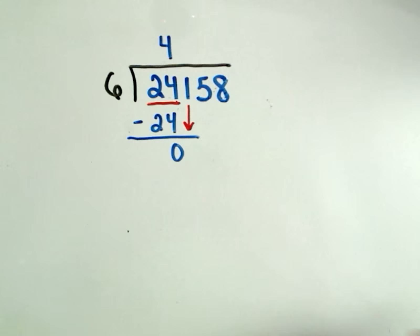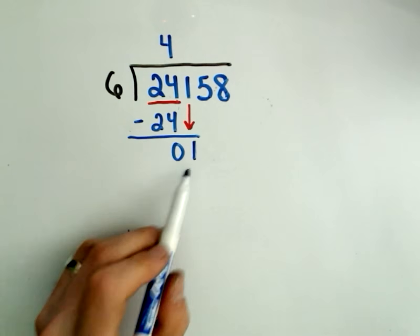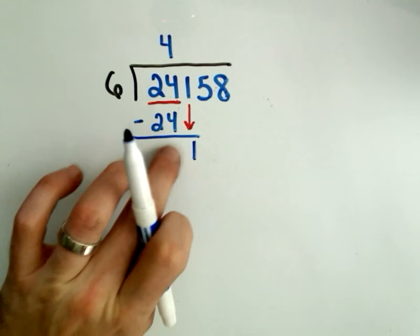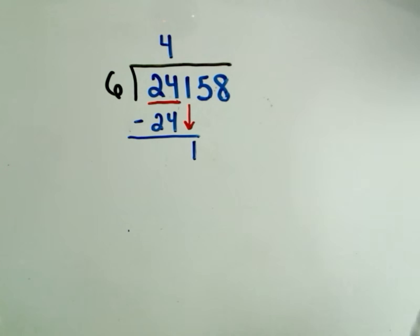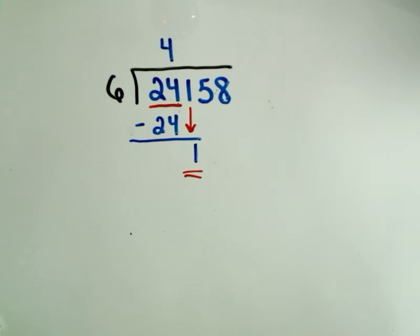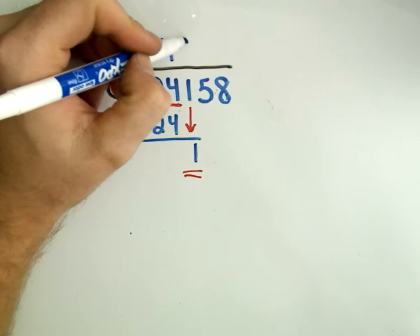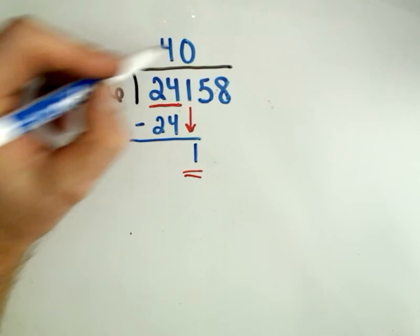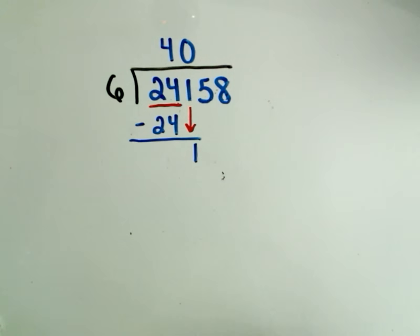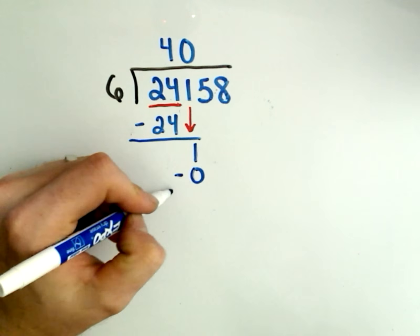Okay, so I drop down the number 1. So I've got zero and 1, if you want you can just get rid of the zero, it's just the number 1. And then again I think will 6 go into the number 1? Well no, the answer is no because it's too big. So it'll go into the number 1 zero times. So then I take zero times 6, and again I put that number underneath which is just zero, and then I subtract. So 1 minus 0 is 1.